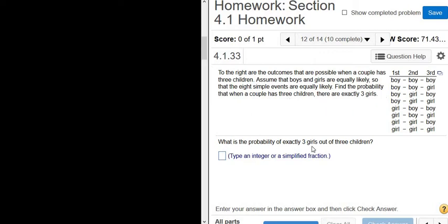And here it says, what is the probability of exactly three girls out of three children? These are all the possibilities that can happen when a couple has three kids. So for example, boy-boy-boy means the first one's a boy, the second one's a boy, the third one's a boy. Boy-boy-girl means two boys and then a girl. So there's all these possibilities here.